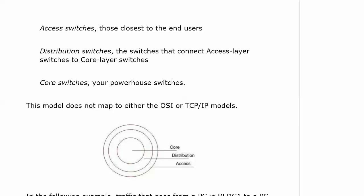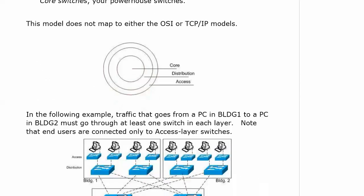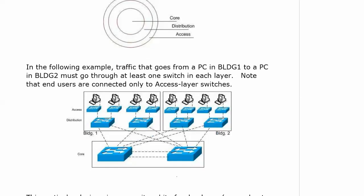Your powerhouse switches in your core — the only thing you want those switches to do is switching. You don't want them doing QoS or anything else. In the example shown here, there's an access-distribution-core setup with two different buildings, and traffic going from a PC in building one to a PC in building two has to go through at least one switch in each layer. Your end users — your PCs — are connected only to access layer switches.